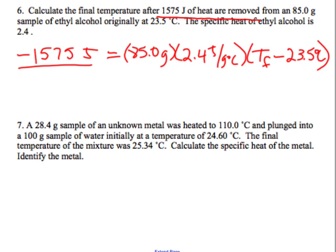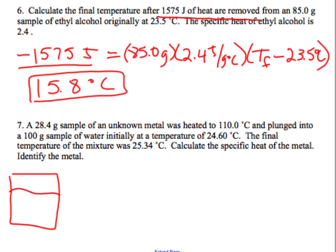We got some fast calculators today, I like it, gives me more time to tell stories. Is that right, everyone else got that? A 28.4 gram sample of an unknown metal was heated to 110 degrees Celsius and plunged into 100 grams of water initially at a temperature of 24.6. The final temperature of the mixture was 25.34. Calculate the specific heat of the metal. Don't let this freak you out. Here's what's going on. We have some ice cold water in there, nice and cold. It's really not that cold, it's pretty much room temperature. We have some tepid water in this glass. We're going to take a really really really hot piece of metal and throw it in the glass. Someone describe to me the heat transfer.